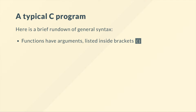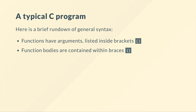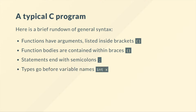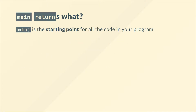And then we return zero because we need to return something of type int. A brief rundown of general syntax: functions have arguments — we list these inside brackets. A quick side note: arguments are the numbers, values, or variables you put in a function call, and parameters are what you put in the definition. We contain the function body within braces, and we end statements with semicolons. Types go before variable names.